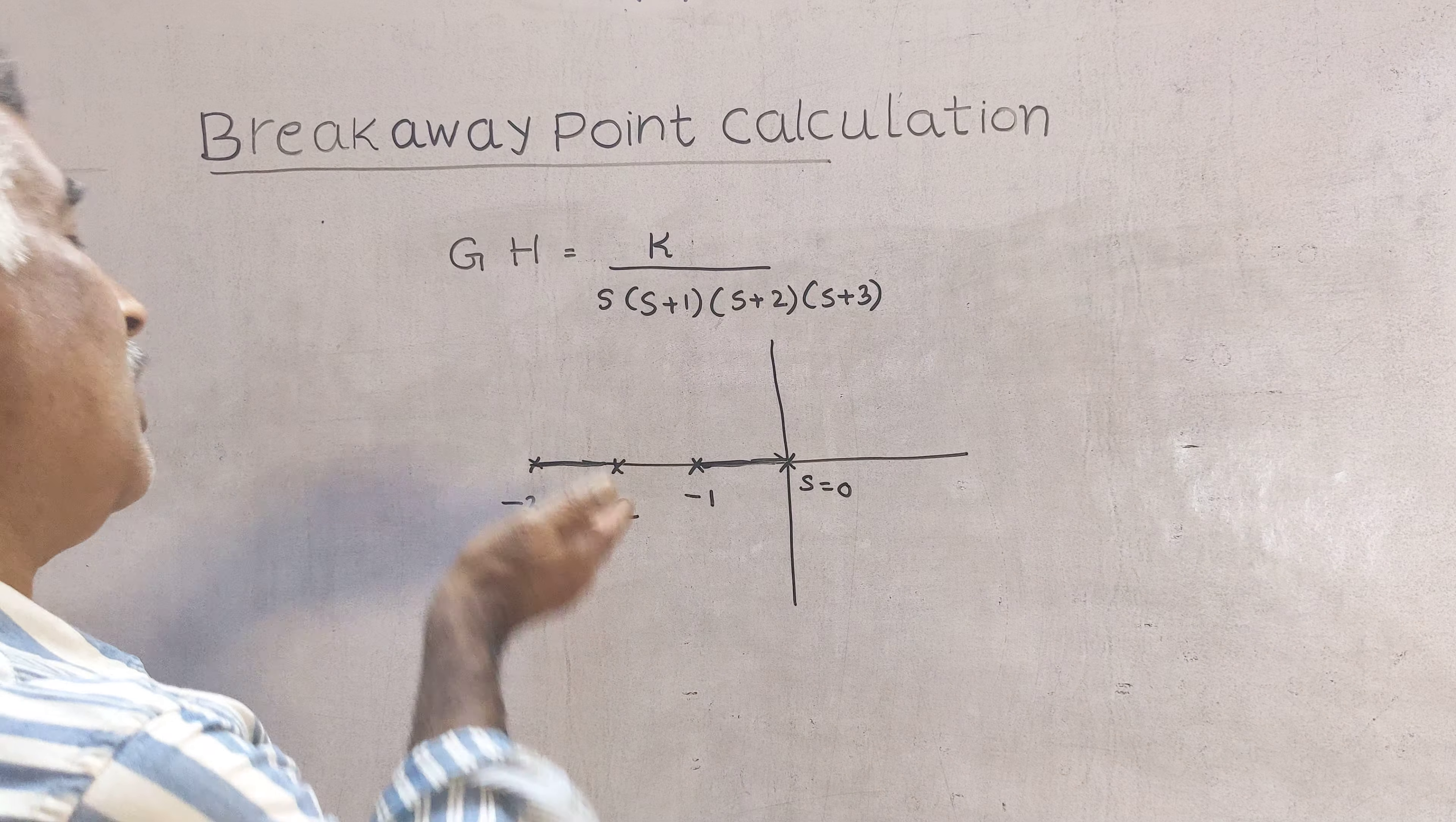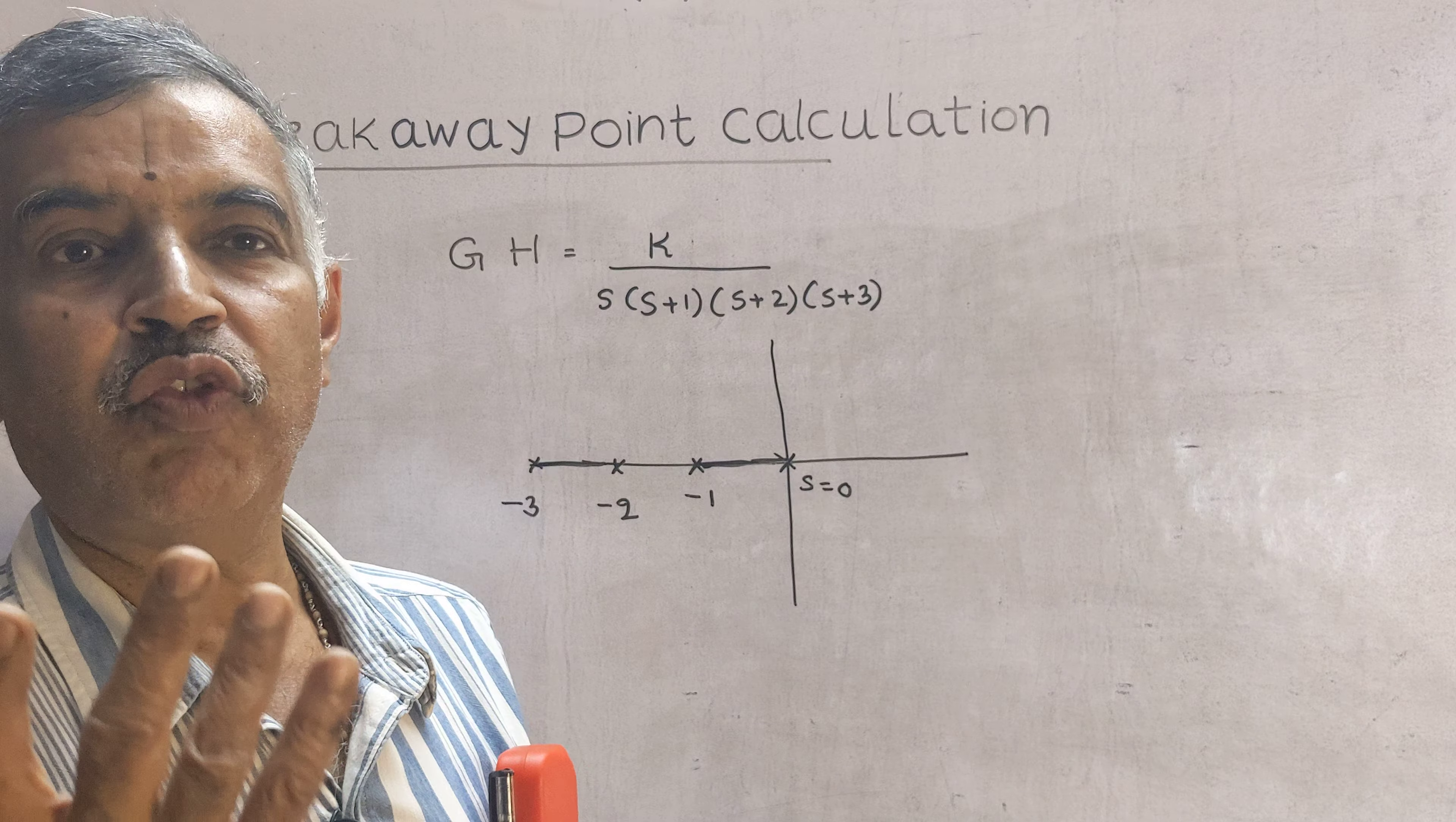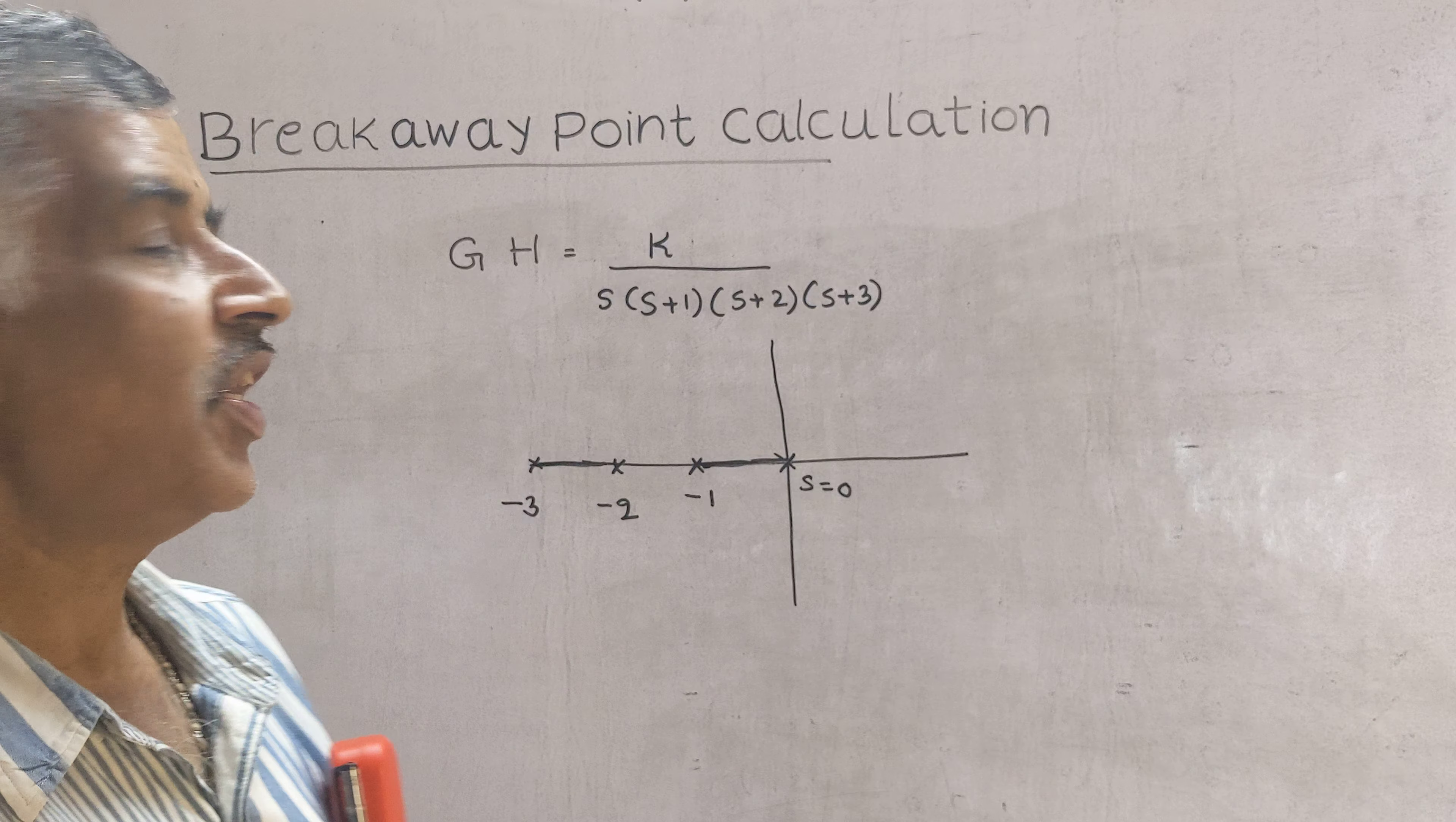Next to the left of minus 3. For these points to their right the number of poles is even, that is 4. Therefore there cannot be root locus to the left of minus 3.